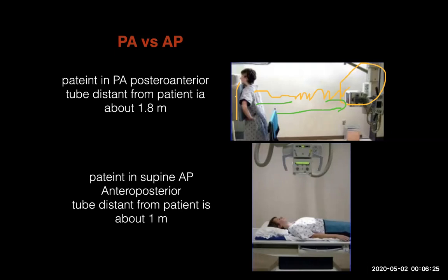In the AP view, we use it for ambulatory patients who are critically ill and cannot stand. The source passes to the cassette at a distance of about 1 meter, and the X-ray beam hits the anterior part of the patient — that's why it's called AP view. But we have some problem here with magnification of the cardiac silhouette.